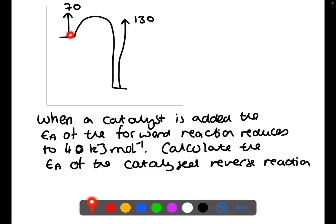Pause the video now and try this question. We have the activation energy for the forward reaction, the reverse reaction, and also the activation energy for the catalyzed forward reaction, which is 40. Adding another curve to help visualize: this means the catalyzed portion here would be 30, so we have reduced the reverse reaction by 30 as well, making the catalyzed activation energy for the reverse reaction 100.